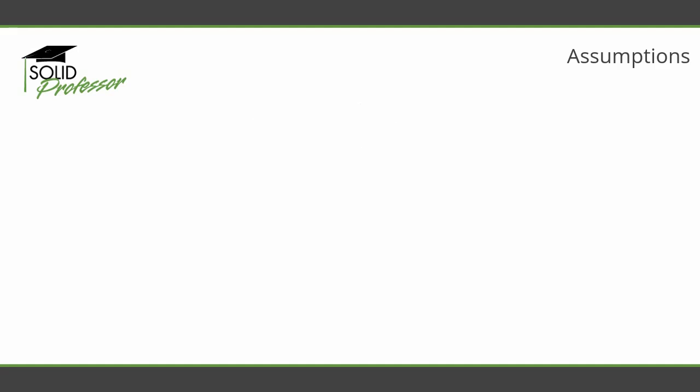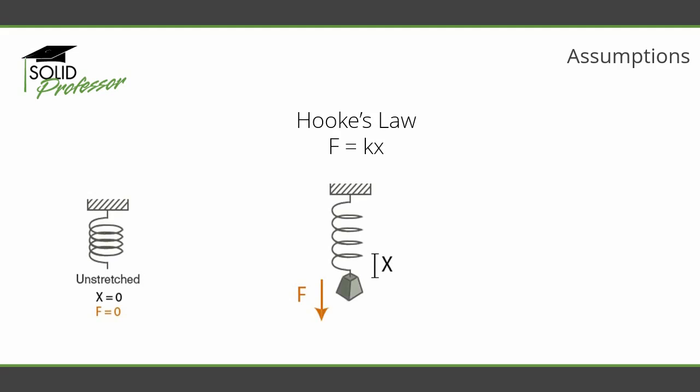For a material to be considered linear, it must obey Hooke's law. This simply means that a material behaves like a spring. The amount of force applied to a spring is related to its deflection by a constant value. If you triple the force, you also triple the deflection. This describes a simple linear relationship.